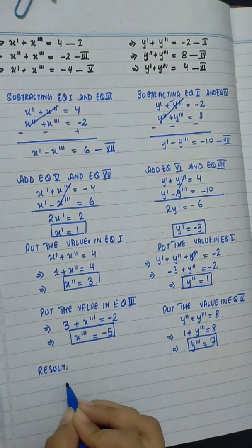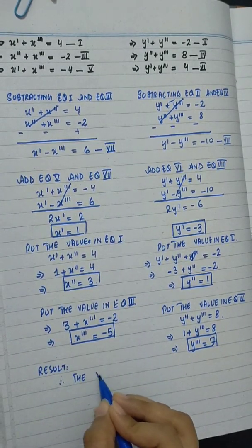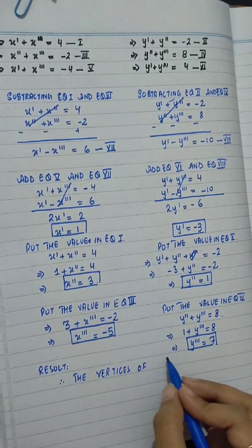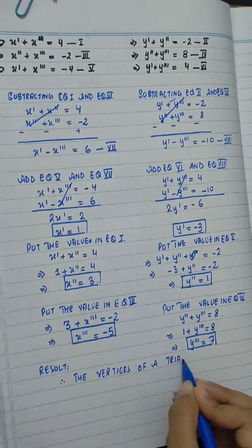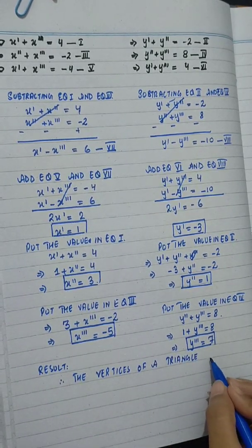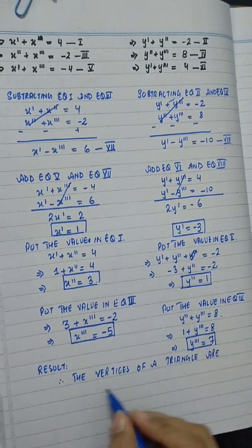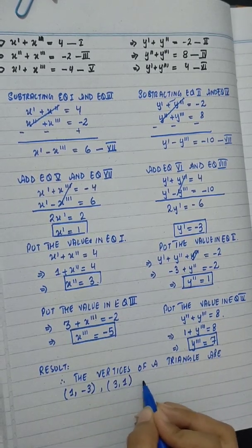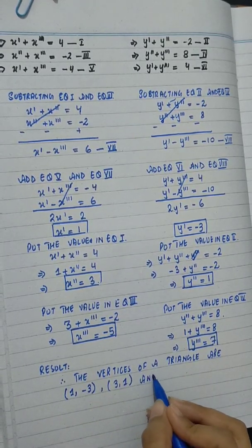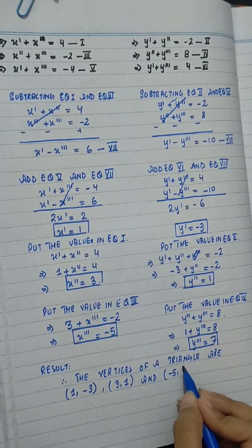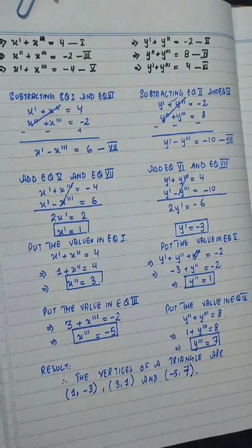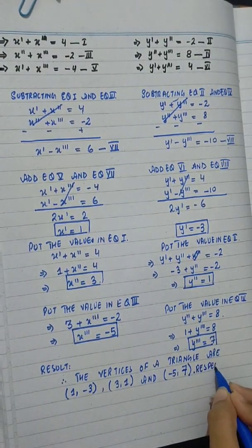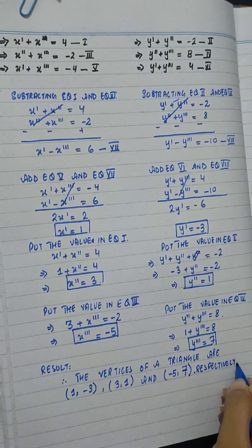Therefore, the vertices of the triangle are (1, minus 3), (3, 1), and (minus 5, 7) respectively.